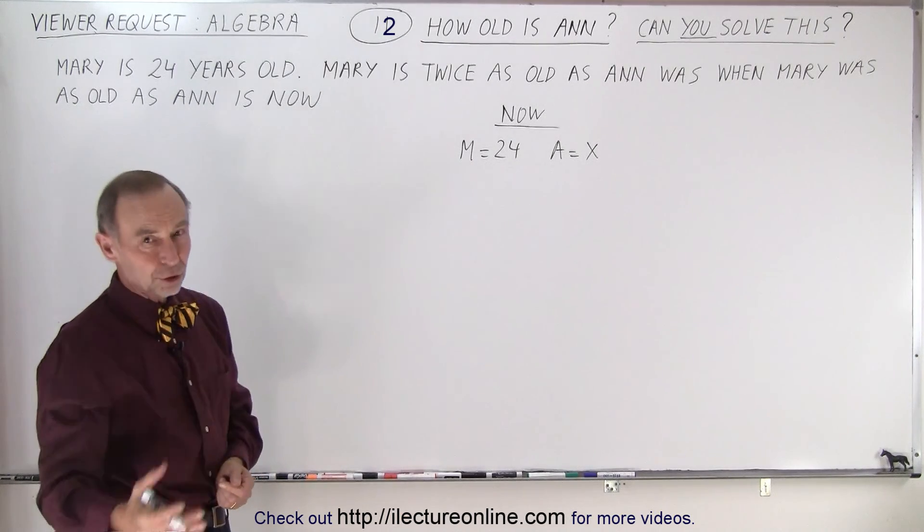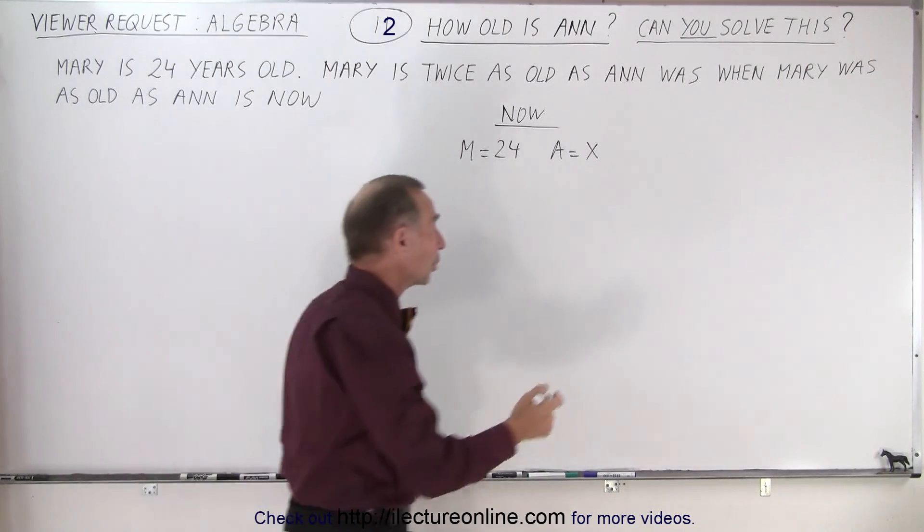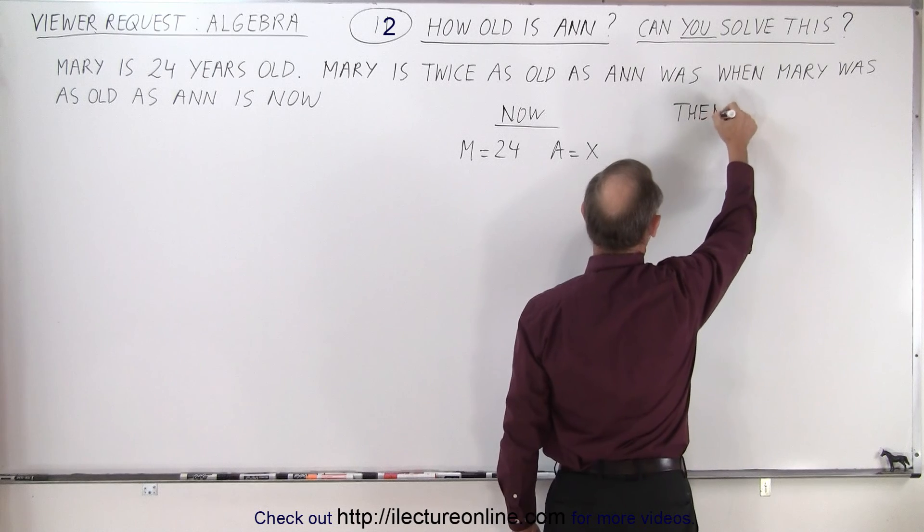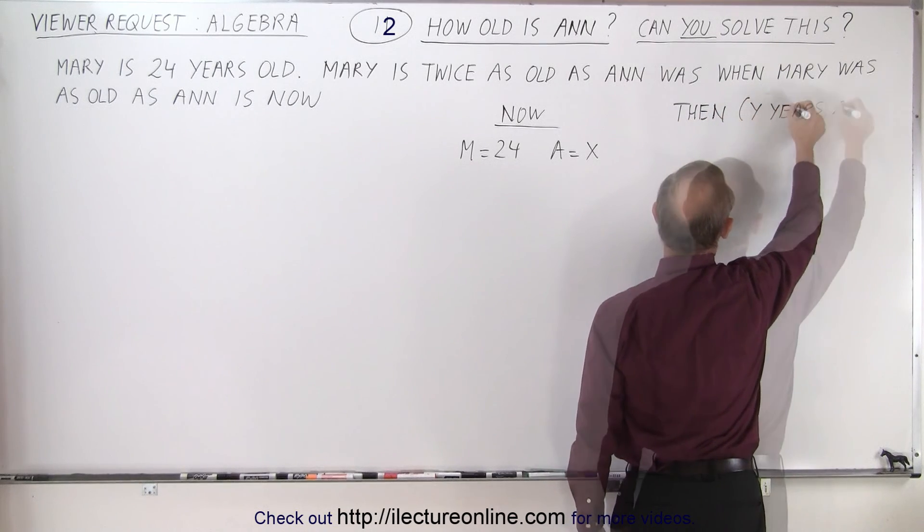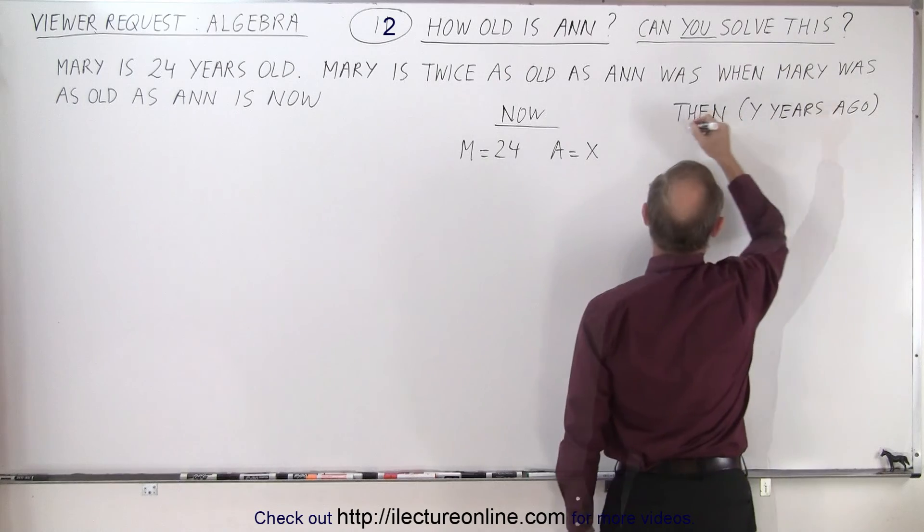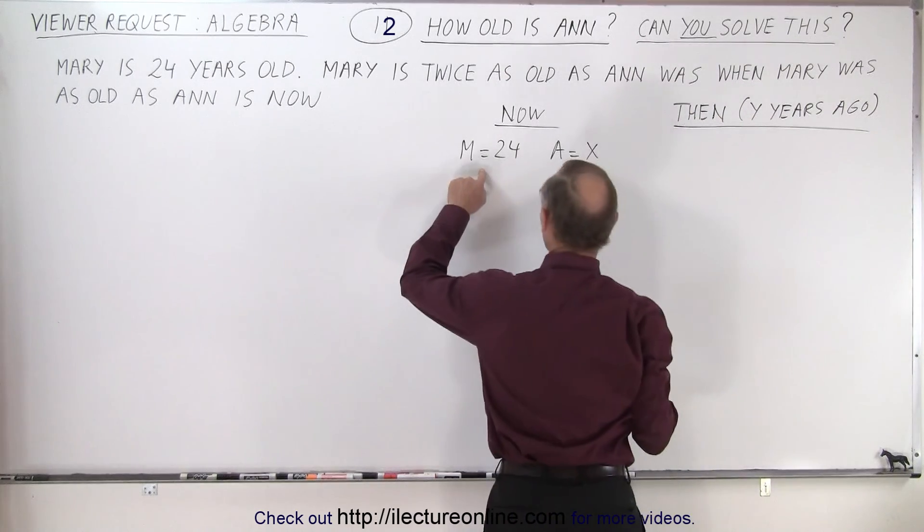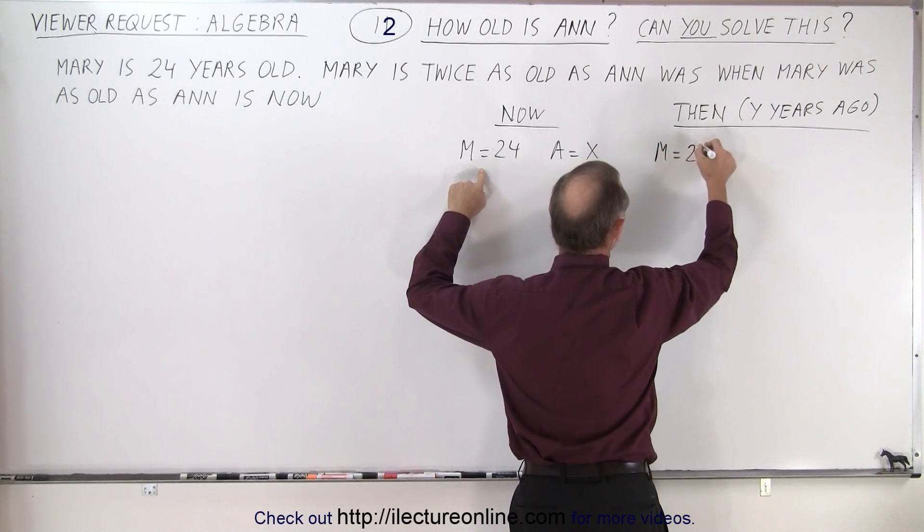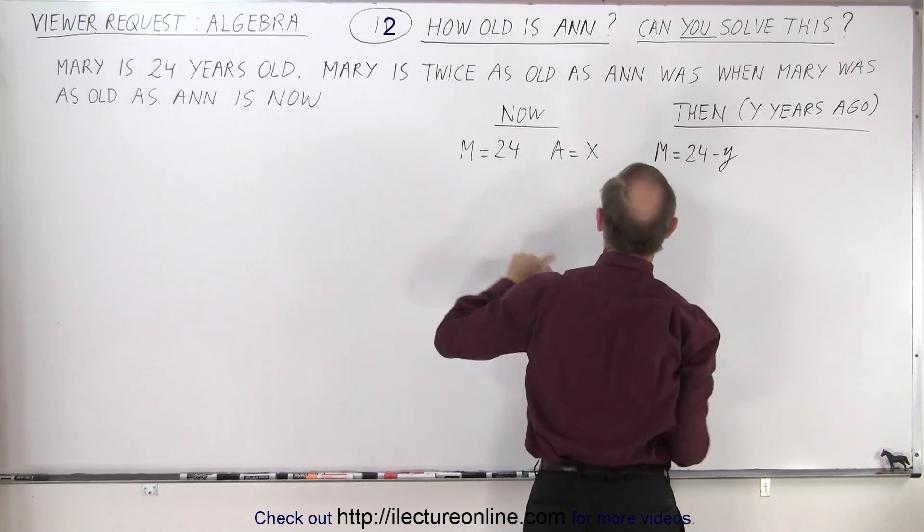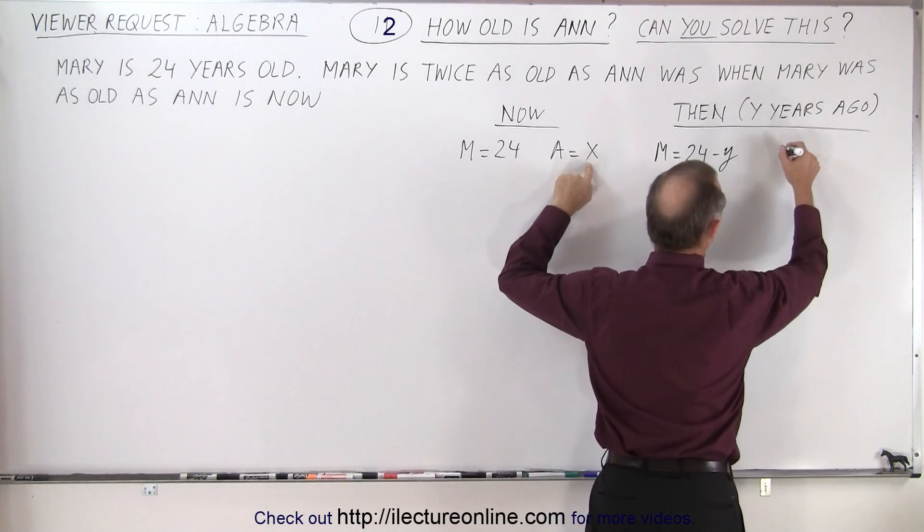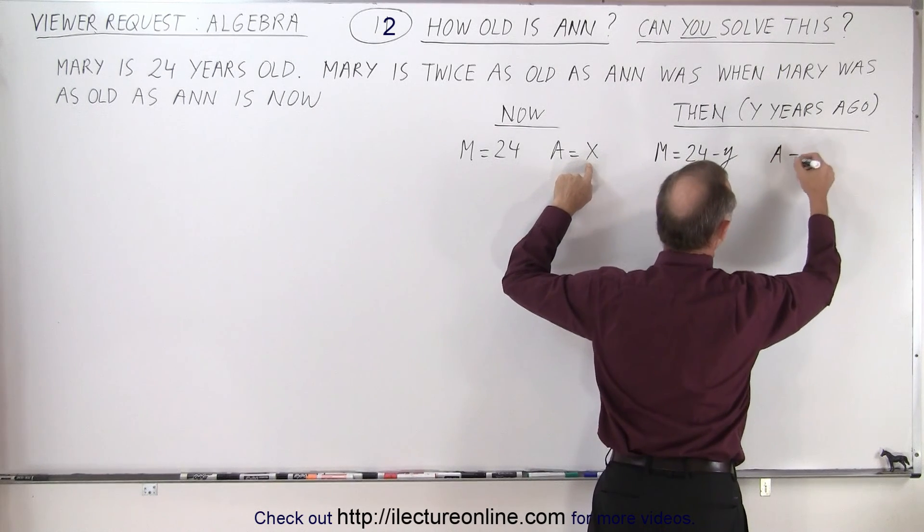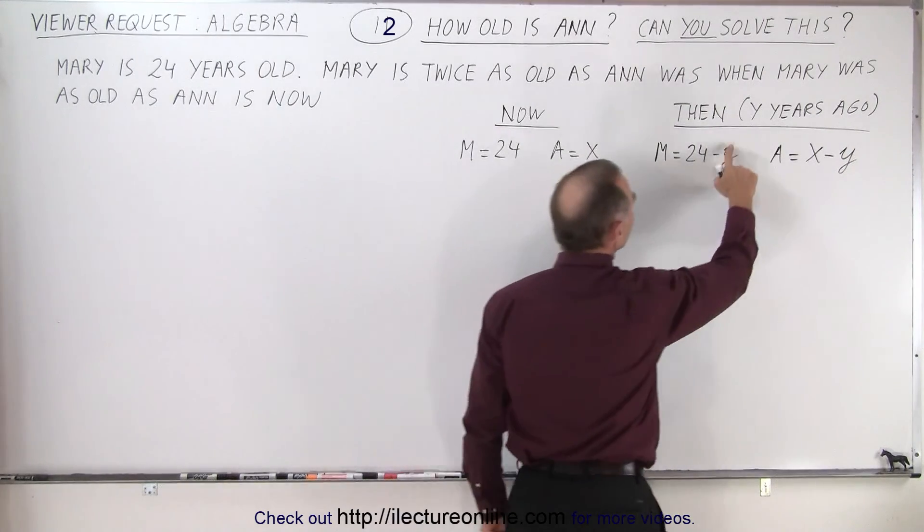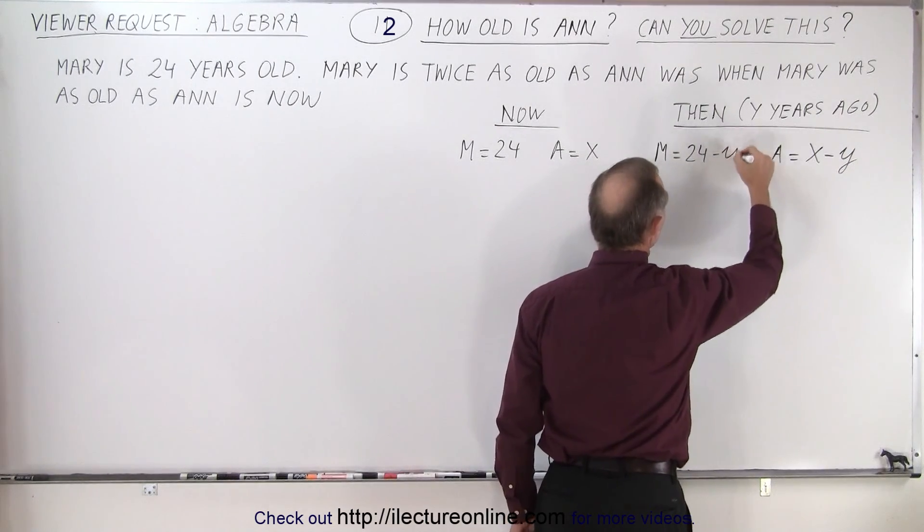Then the number of years ago, and we're not told how many years ago, so then let's call it Y years ago. Well, if Mary is 24 years today then Y years ago Mary should be equal to 24 minus Y. So notice let me rewrite this Y here.